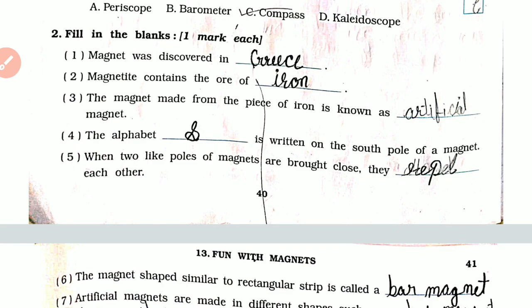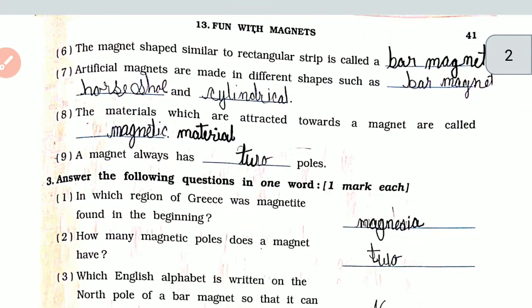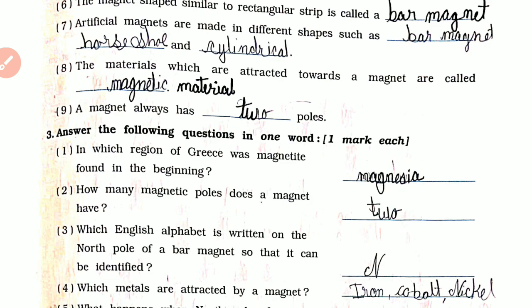Question number 2. Fill in the blanks. Magnet was discovered in Greece. Magnetite contained the ore of iron. The magnet made from a piece of iron is known as an artificial magnet. The alphabet S is written on the south pole of a magnet. When two like poles of a magnet are brought close, they repel each other. The magnet shaped similar to a rectangular strip is called a bar magnet. Artificial magnets are made in different shapes such as bar magnet, horseshoe, and cylindrical magnet. The materials which are attracted toward the magnet are called magnetic materials. A magnet always has two poles.